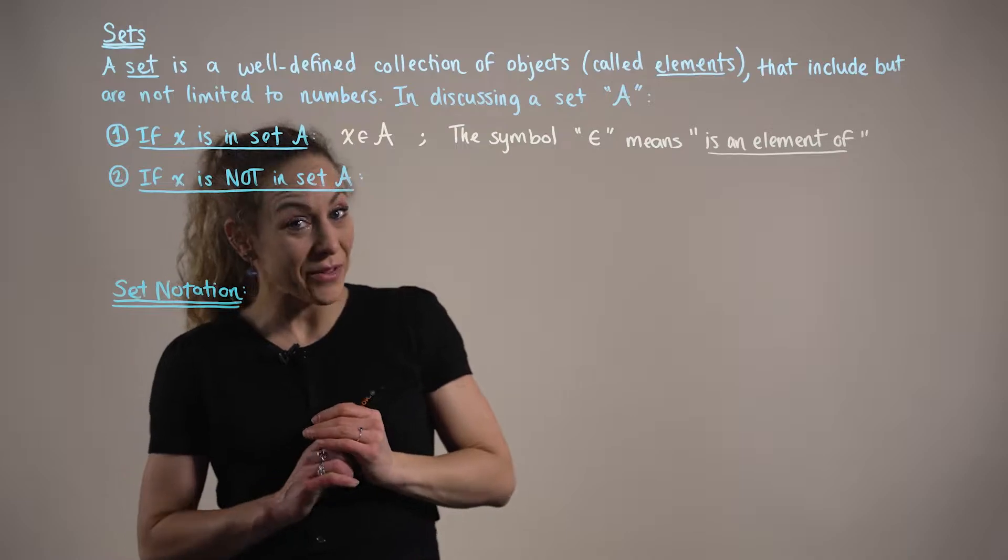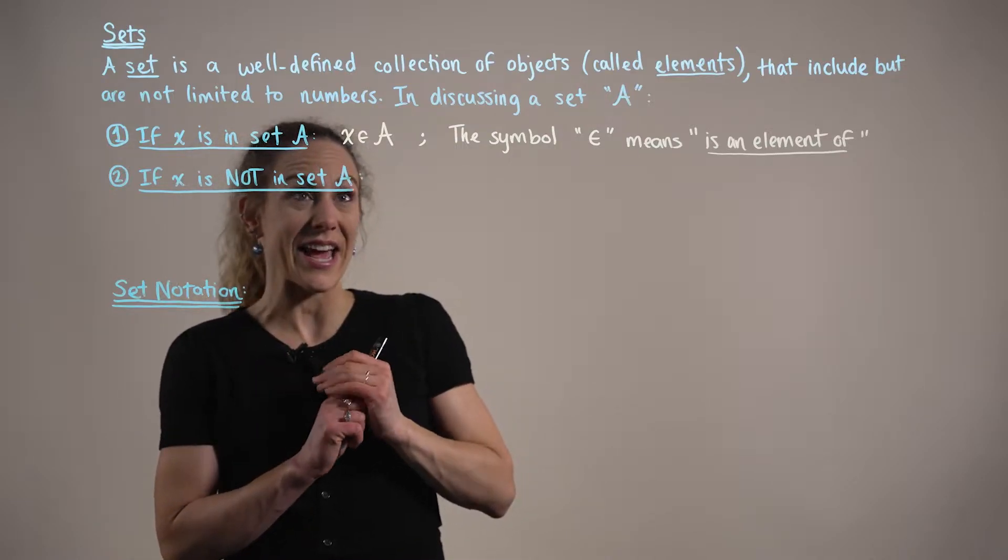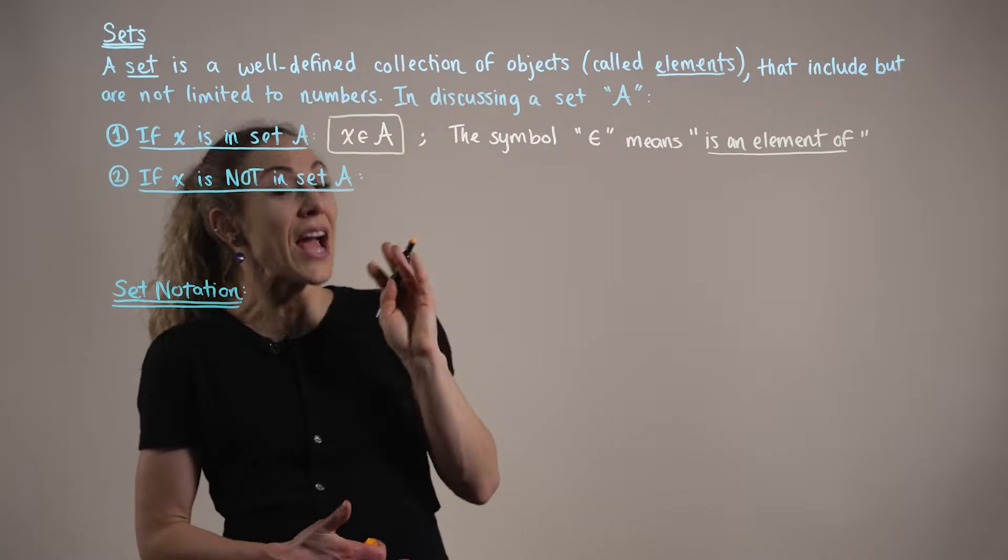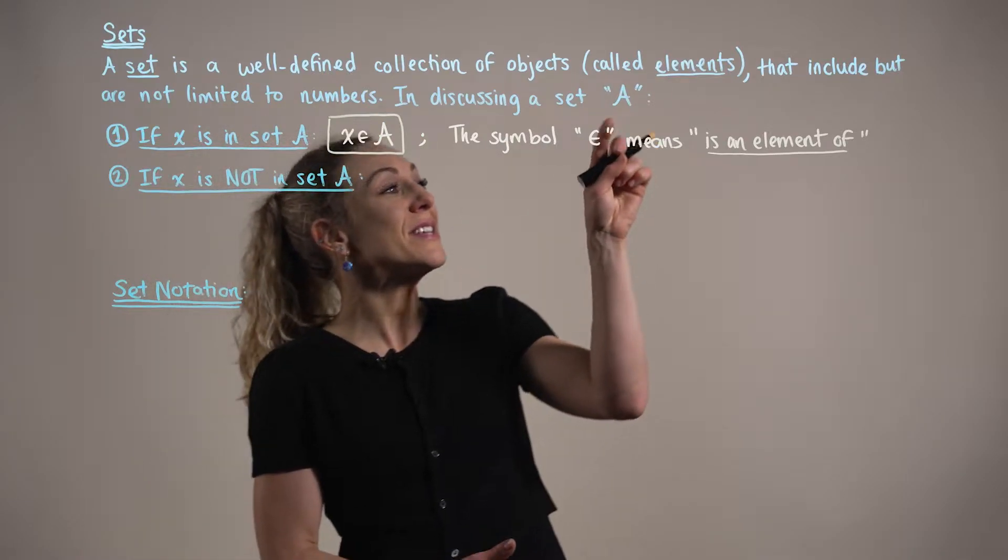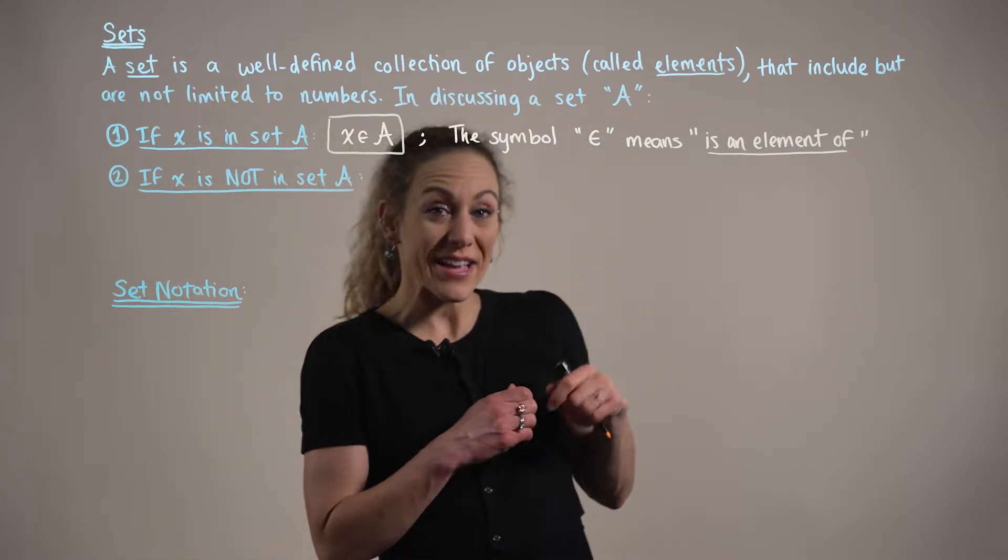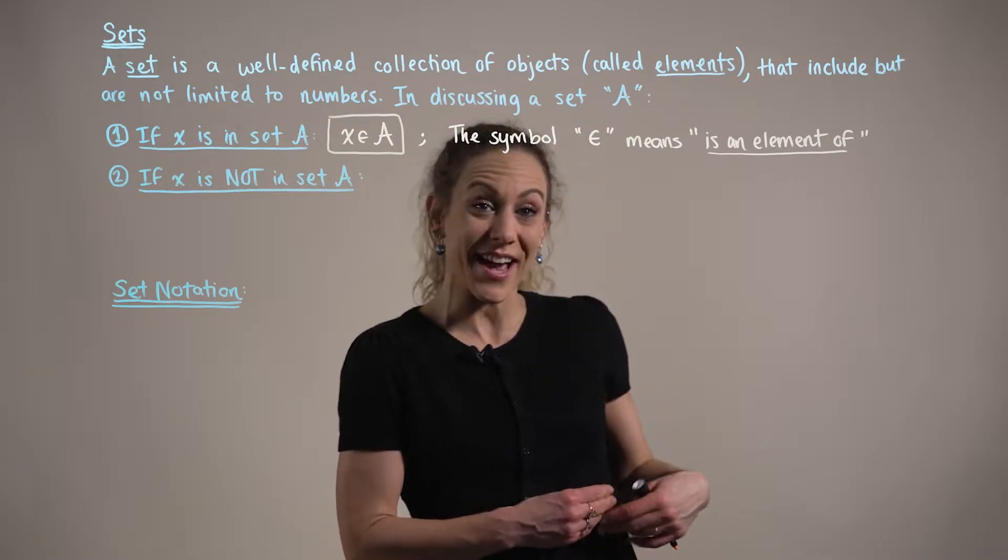Now, if an element x is in the set A, we denote it as follows. And we want to make a note that this symbol, the rounded E, means, or reads, is an element of the set.